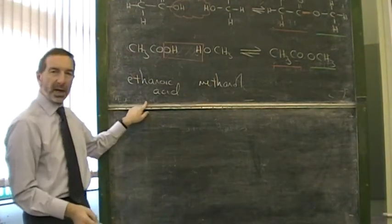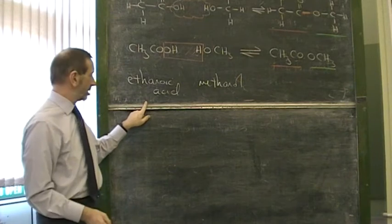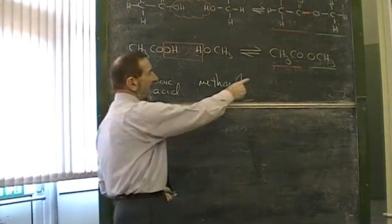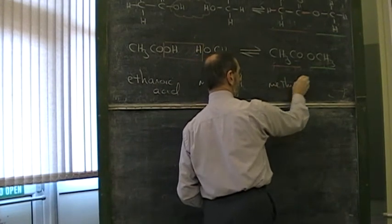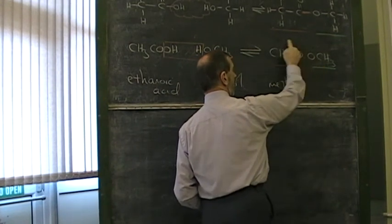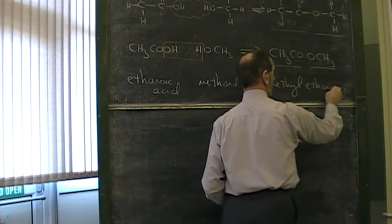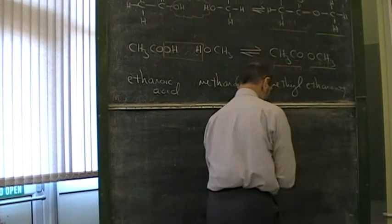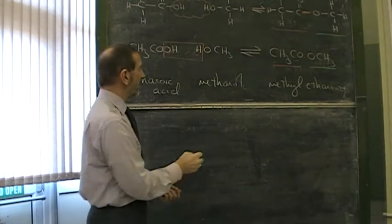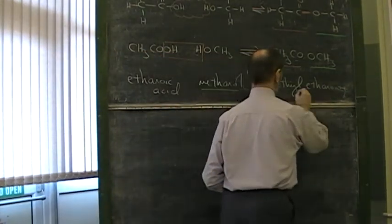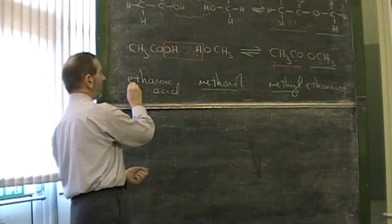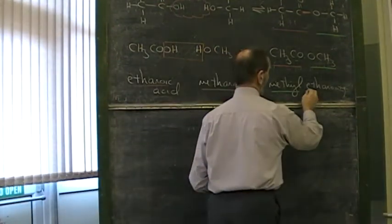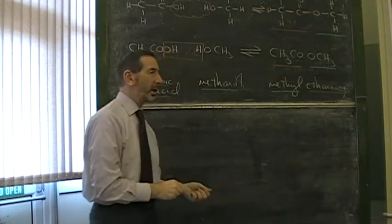Well, ethanoic acid produces ethanoates. So this is an ethanoate. This is methanol. Ethanoate. So we have to practice naming these esters. This particular combination of ethanoic acid and methanol gives this particular ester.